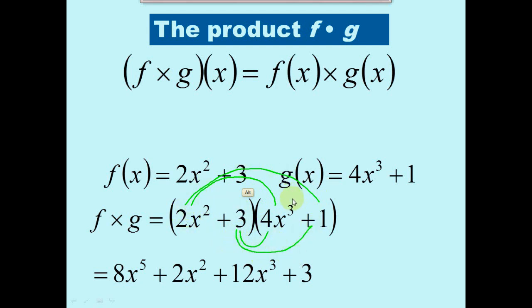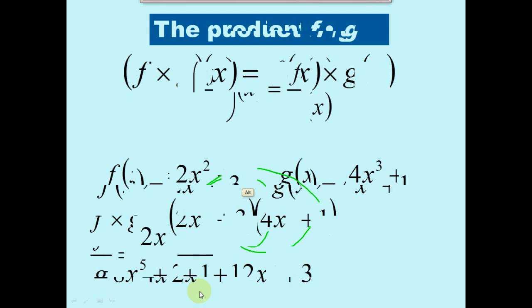You FOIL it — firsts, outer, inner, lasts — and then you add like terms to get the final result.